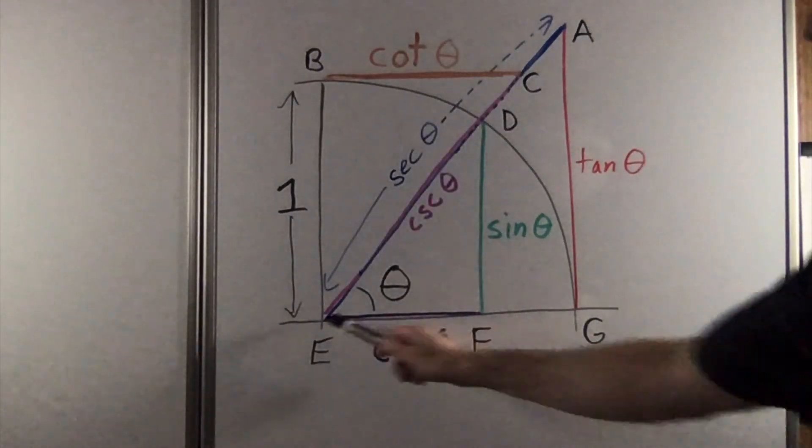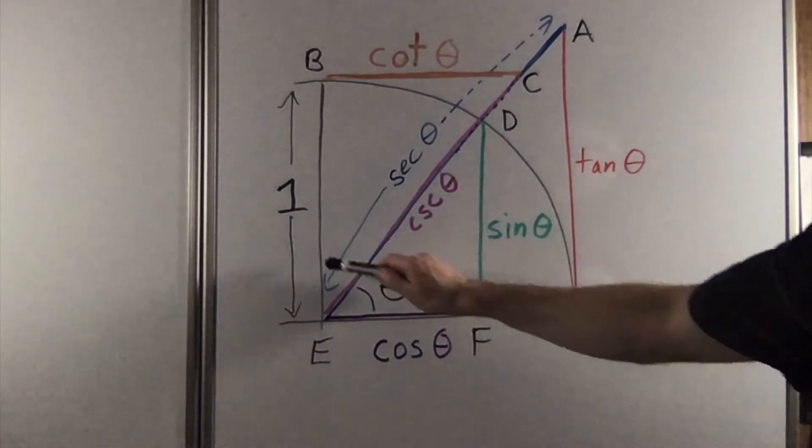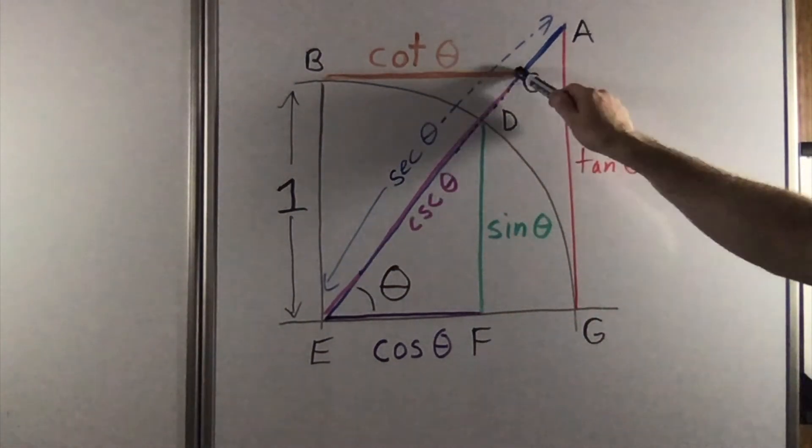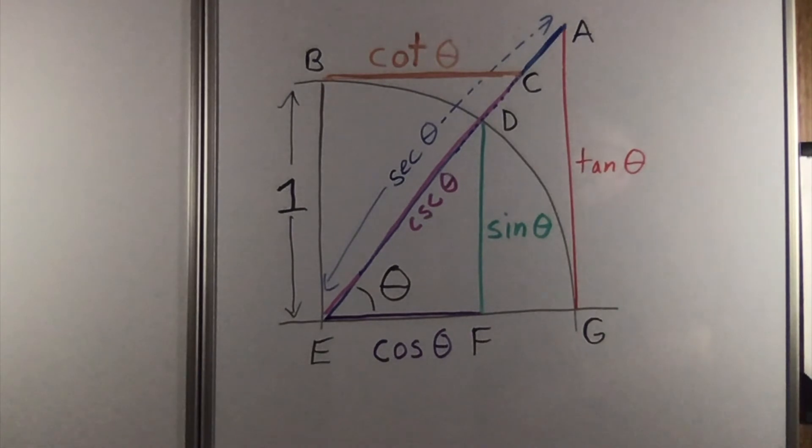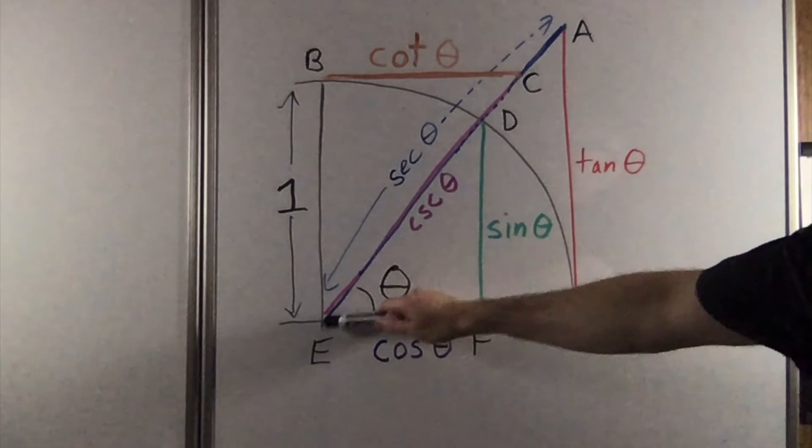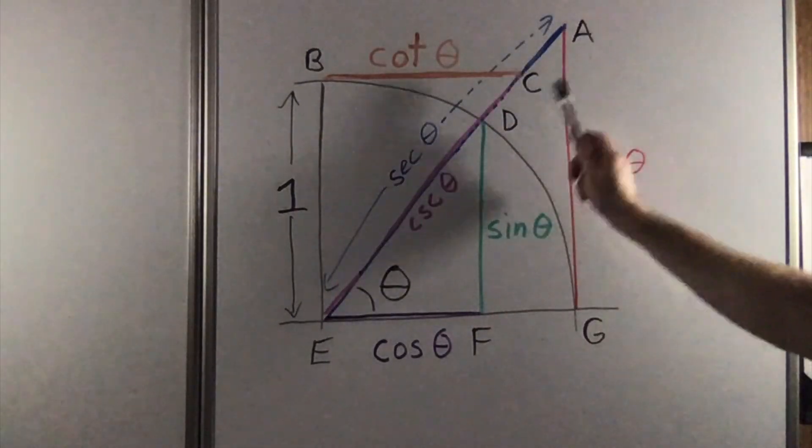And so A, G, E is a right triangle. This angle is the complement of theta, so this is the cotangent of theta. And the hypotenuse of this is the cosecant, whereas the blue hypotenuse all the way is the secant.